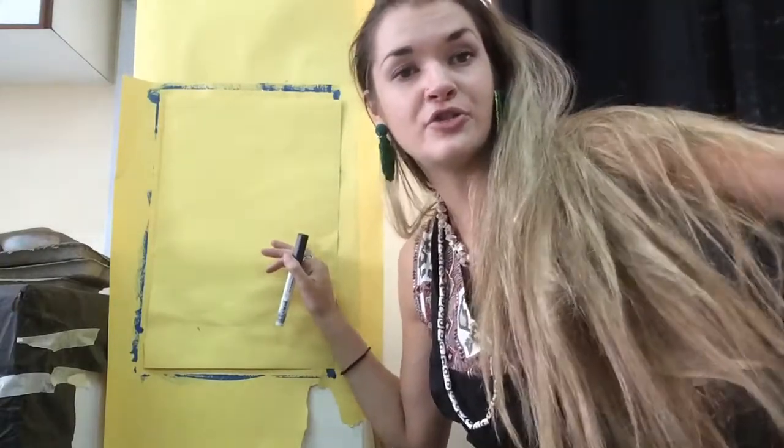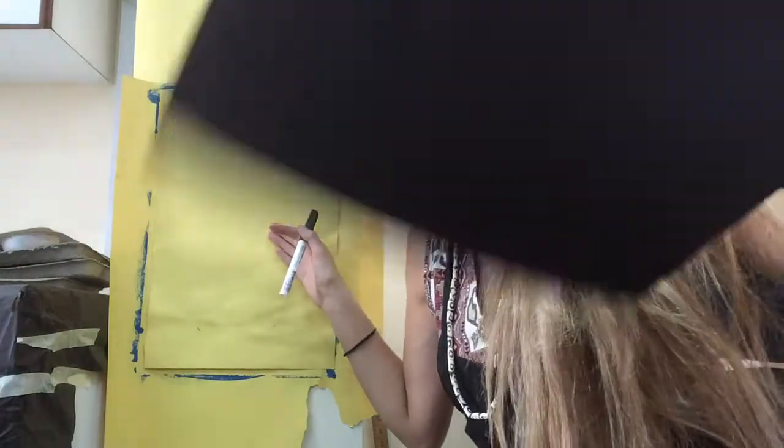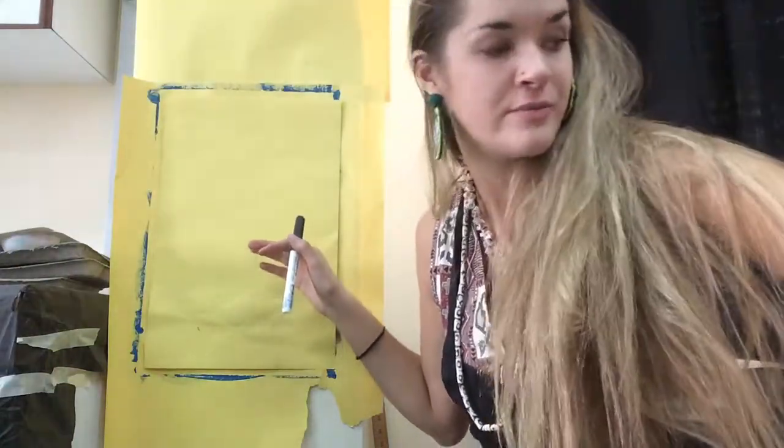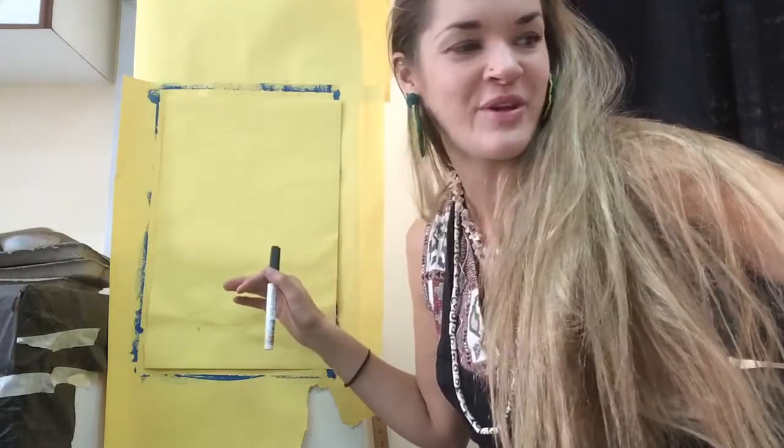We're going to learn how to draw an Egyptian cat, then cut it out from yellow paper and put it on a black background. Today you'll need yellow construction paper, black construction paper, scissors, glue, and a pencil. Let's get started.